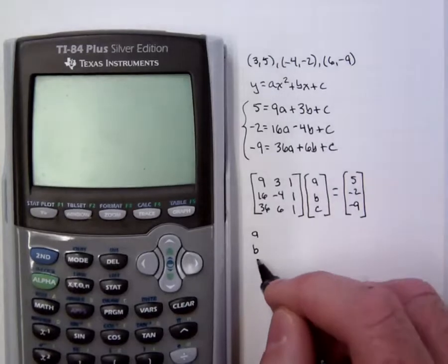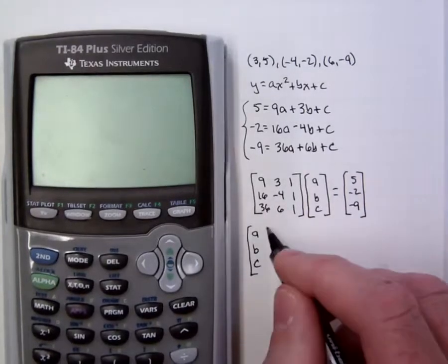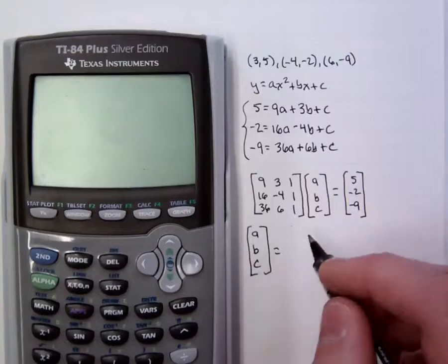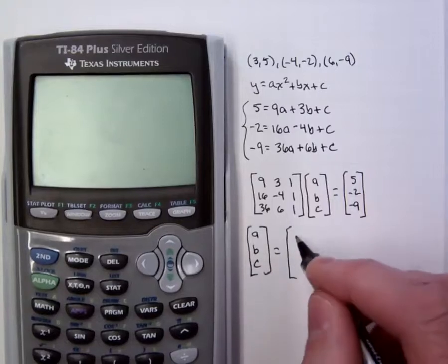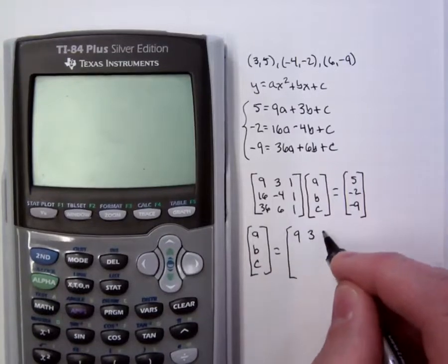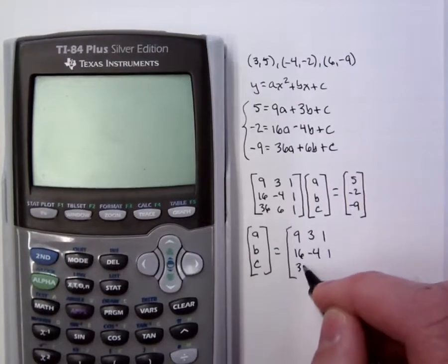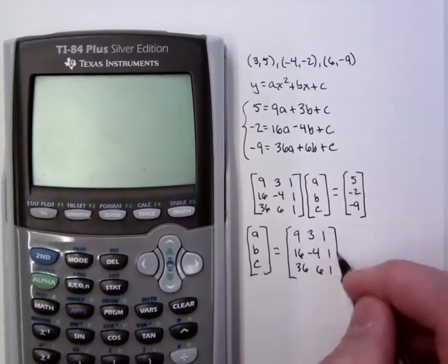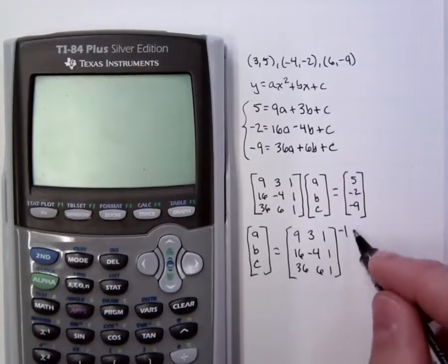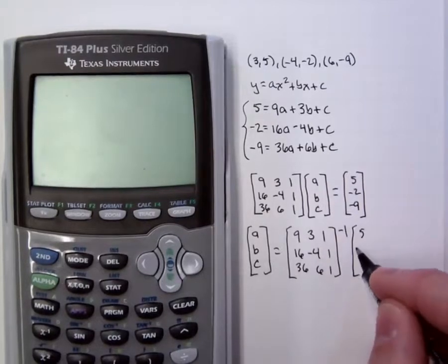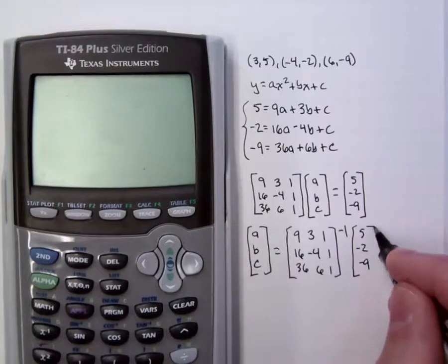The solution to this matrix equation is going to be the 3 by 1 that is the product of the inverse of the 3 by 3 with the 9, the 3, the 1, and so on, and the 3 by 1 with the 5, the -2, and the -9.